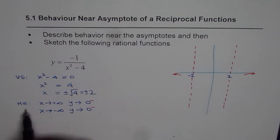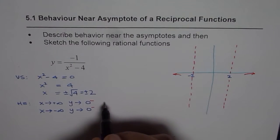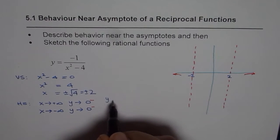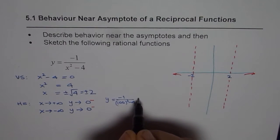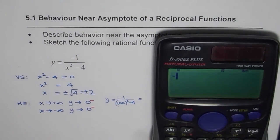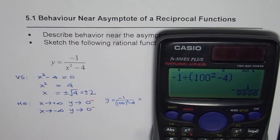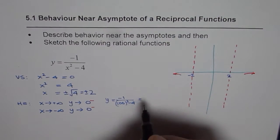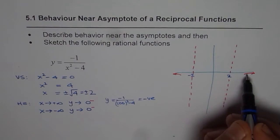To find the end behavior, we substitute large values for x — first positive, then negative. For x = 100: y = -1 / (100² - 4) = -1 / 9996, which equals approximately -1 over 996. We get a negative value — very low but negative. That is why we are approaching from the negative side but approaching 0.